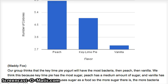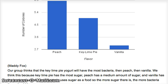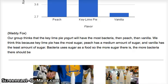This is our flavor expected graph. We think that peach is going to have the most colonies, because it has chunks of peach in it which could host its own bacteria. Vanilla has nothing besides vanilla extract, so we thought that would have the least number of colonies. These are all averages.